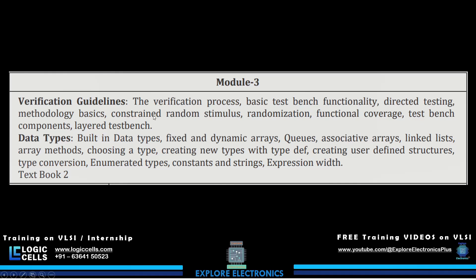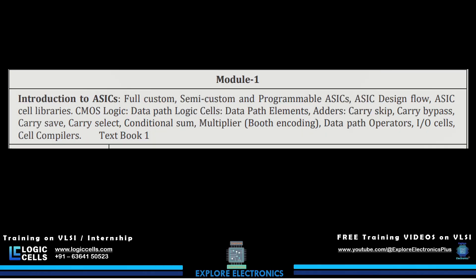Module 3 covers directed testing methodology basics, constrained random stimulus generation in the testbench, how randomization is helpful, functional coverage, testbench components, and layered testbenches. The second half of Module 3 dives into SystemVerilog data types: fixed arrays, dynamic arrays, queues, associative arrays, linked lists, and array methods. It also covers choosing a type, typedef for new types, user-defined structures, type conversions, enum type constants, strings, and expression width.